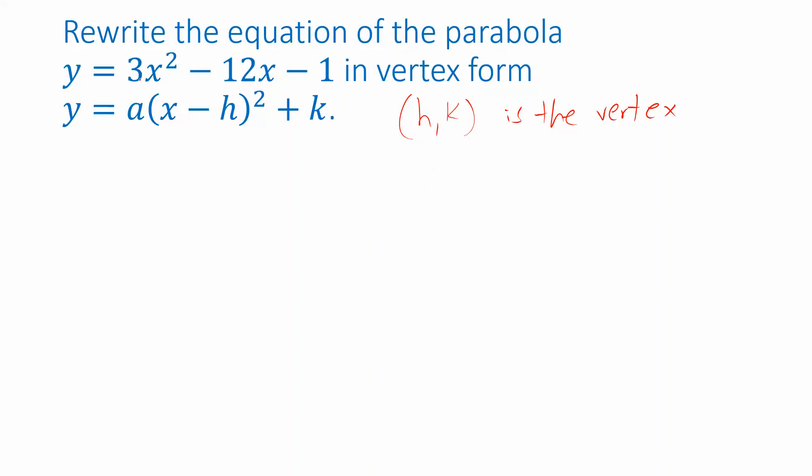The a here is the same as the a in the general form, so our a is still 3. Let's go ahead and write down b and c, since we can see those in the original equation. The coefficient of x is -12, that's b, and c is -1.